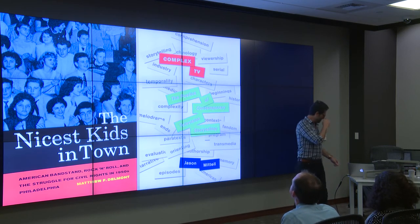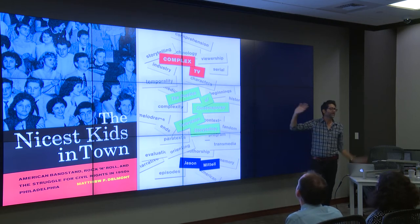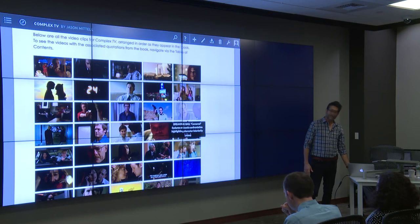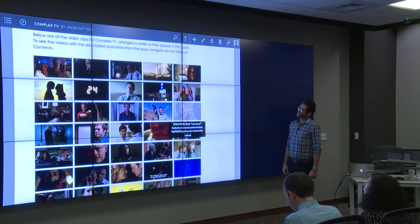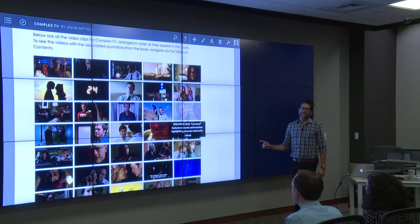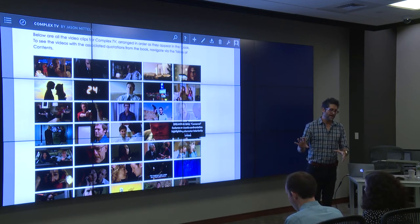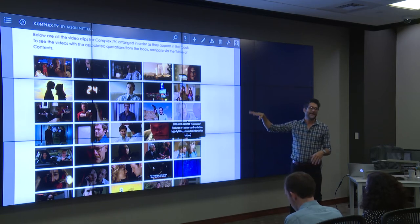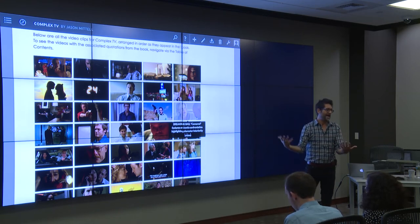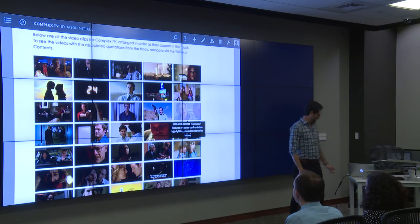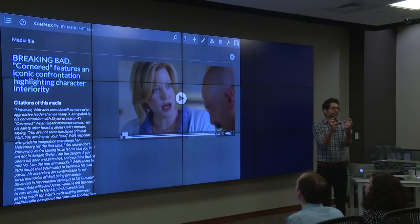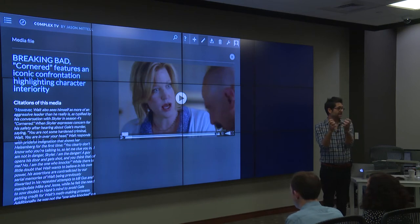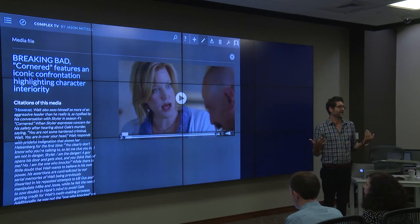They do act somewhat differently even within this book companion genre. Mittell's book acts more as a kind of archive of the film featured in the book — it's an annotated archive. In the main table of contents, you can get at the media via the chapters of the book, but you can also go to a gallery. He's taken the analytical portions of his print monograph that analyze particular clips and put them into Scalar, so it acts as a kind of annotated archive.